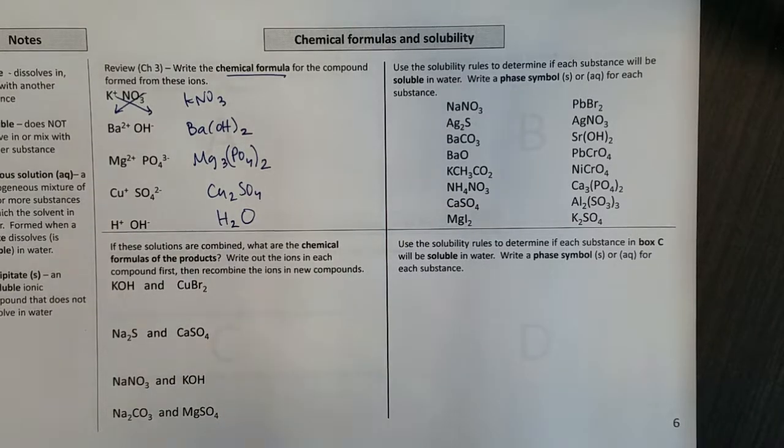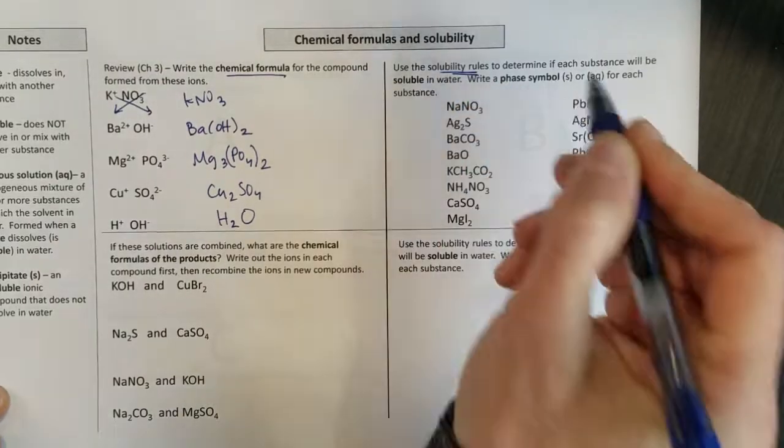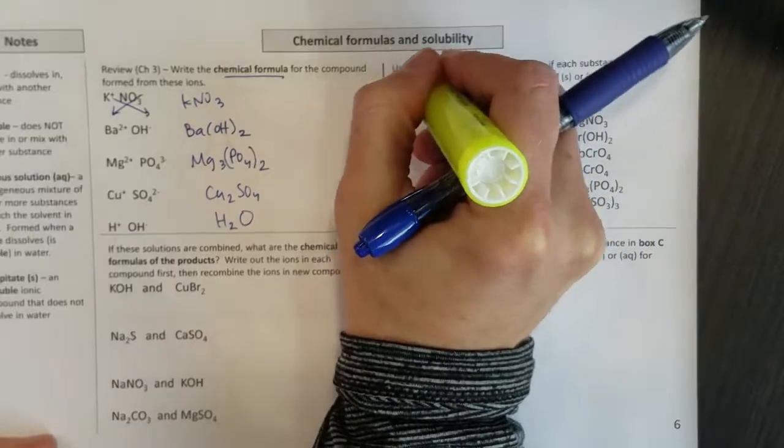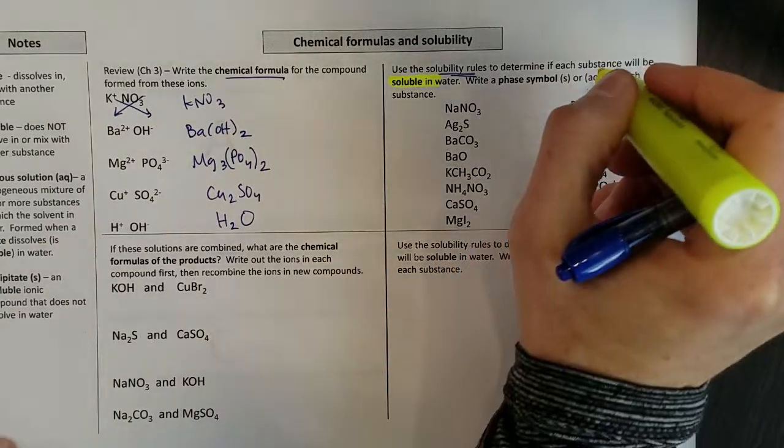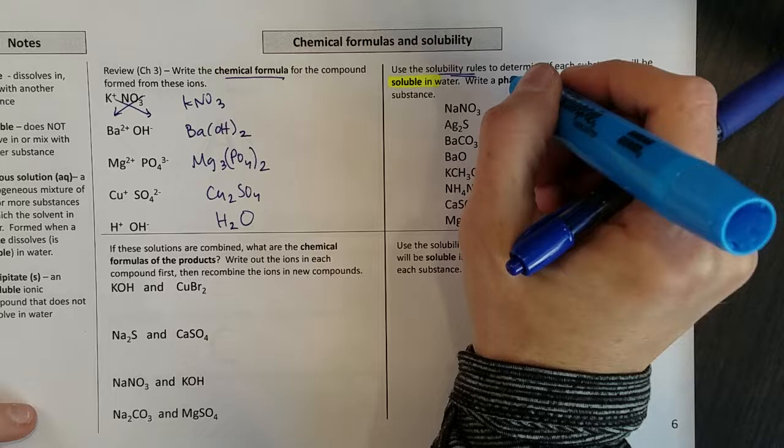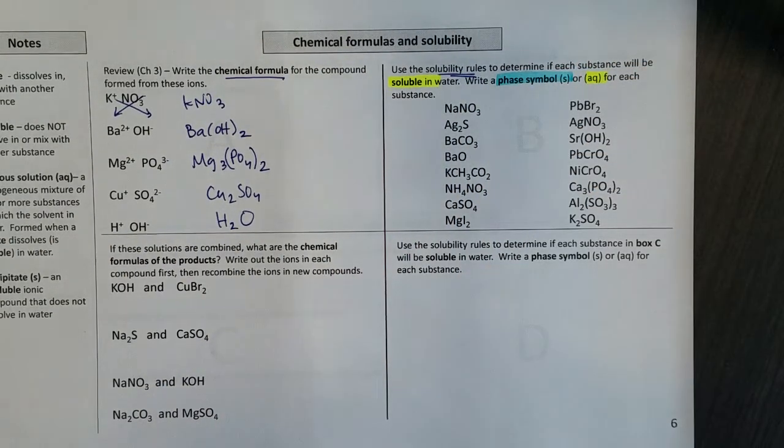So on this slide, we're going to be taking a look at using our solubility rules to determine if each substance is soluble in water. And our solubility rules, those were substances that were aqueous, we used yellow, and phase symbols, those were substances that were blue.